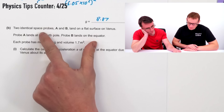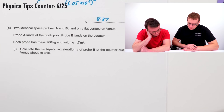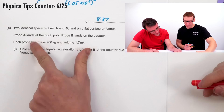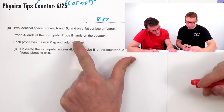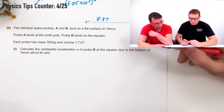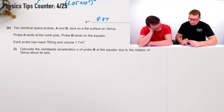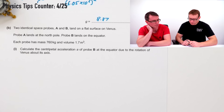The next part gives us two identical space probes A and B that land on a flat surface of Venus. Probe A lands on the North Pole, probe B lands on the equator. As I'm reading this, it's probably connected to centripetal force and centripetal acceleration. Each probe has a certain mass and a volume of 1.7. The question asks us to calculate the centripetal acceleration at the equator due to the rotation of Venus about its axis.